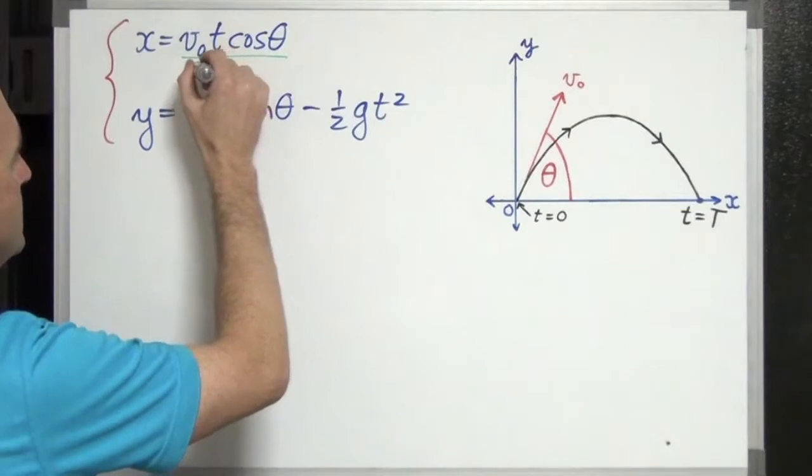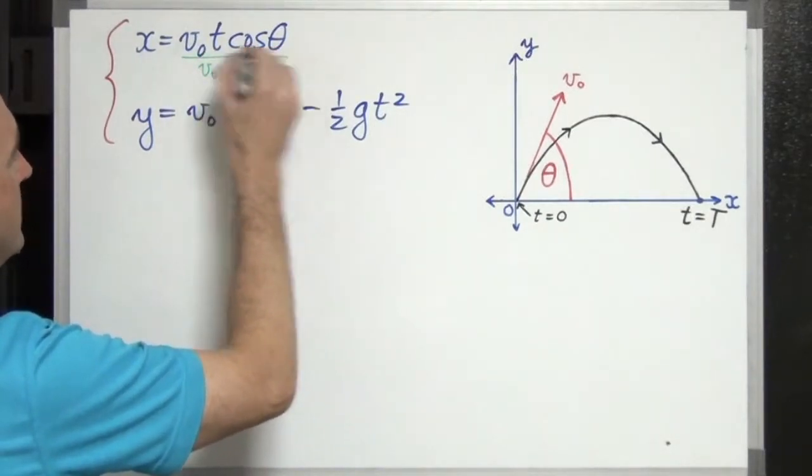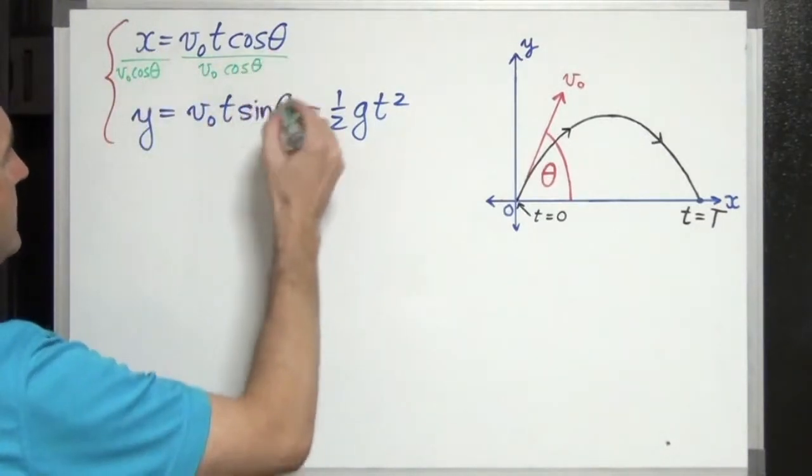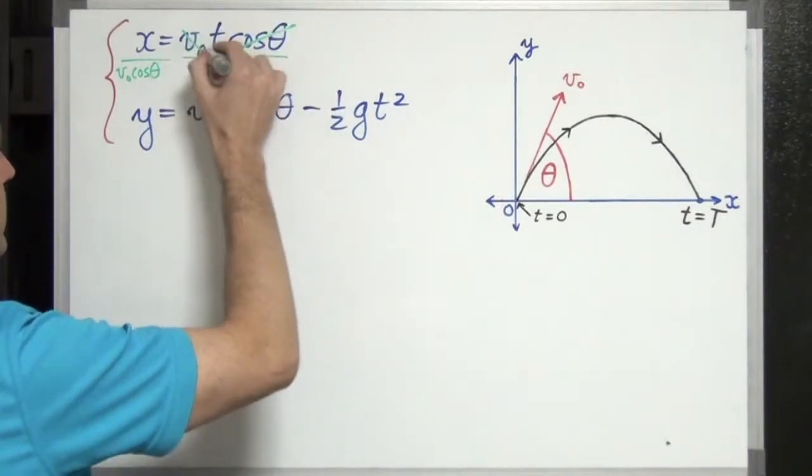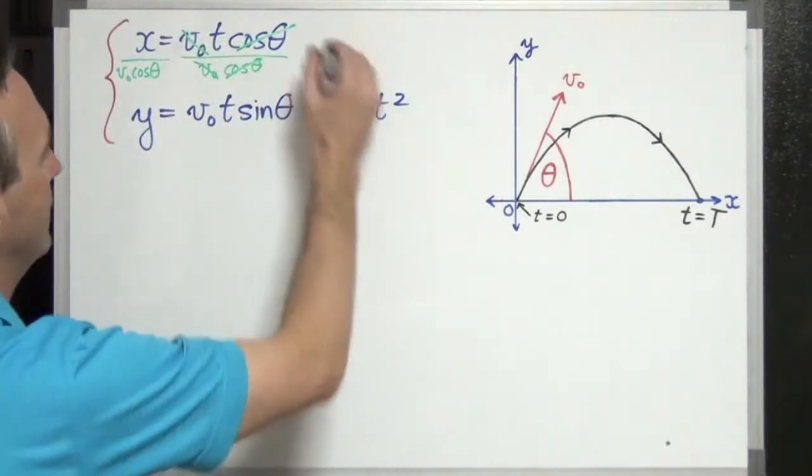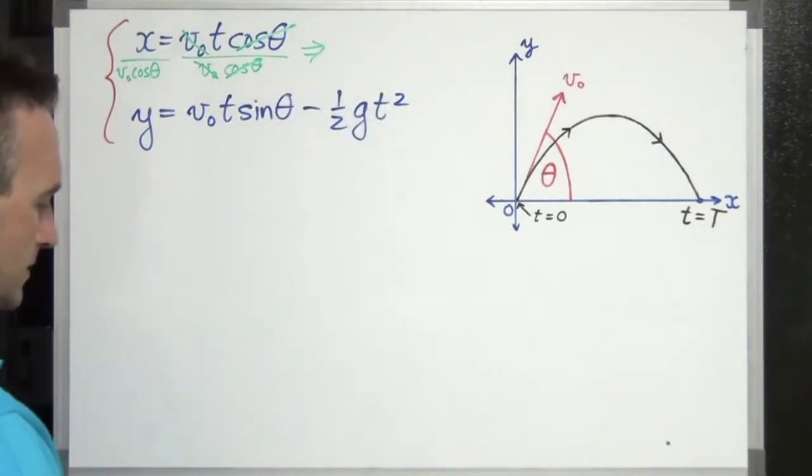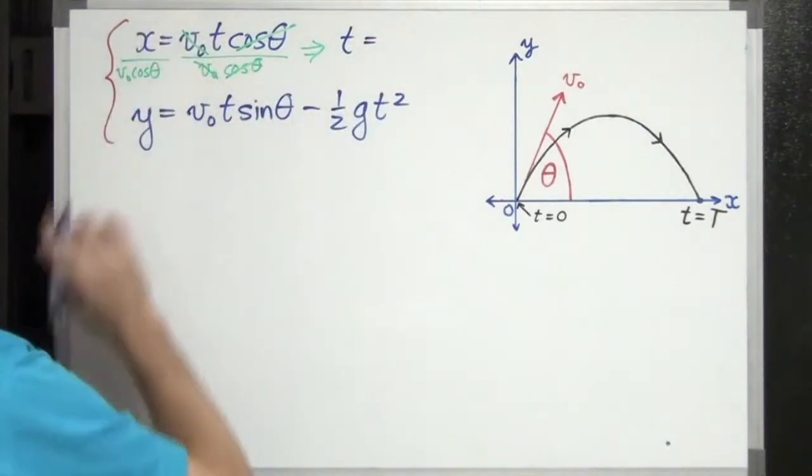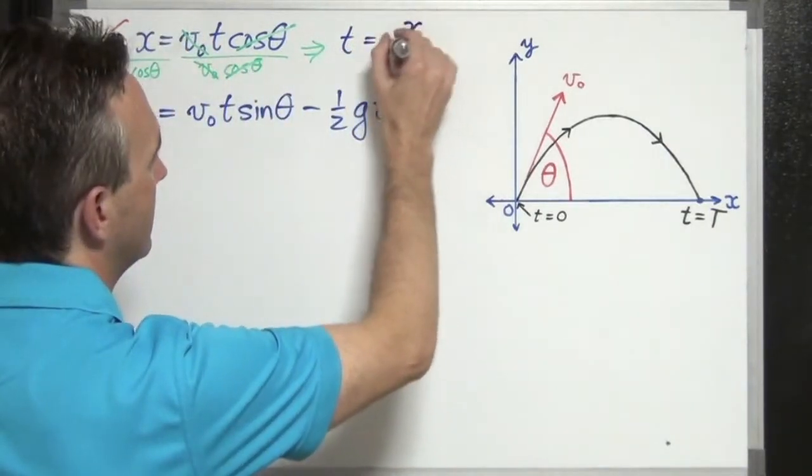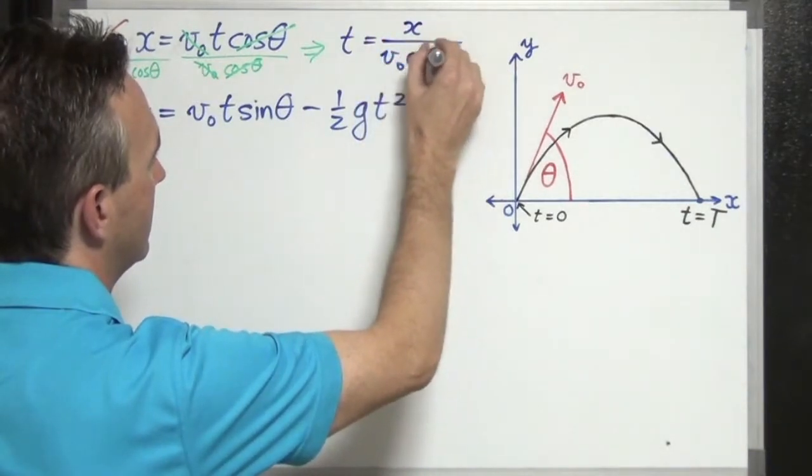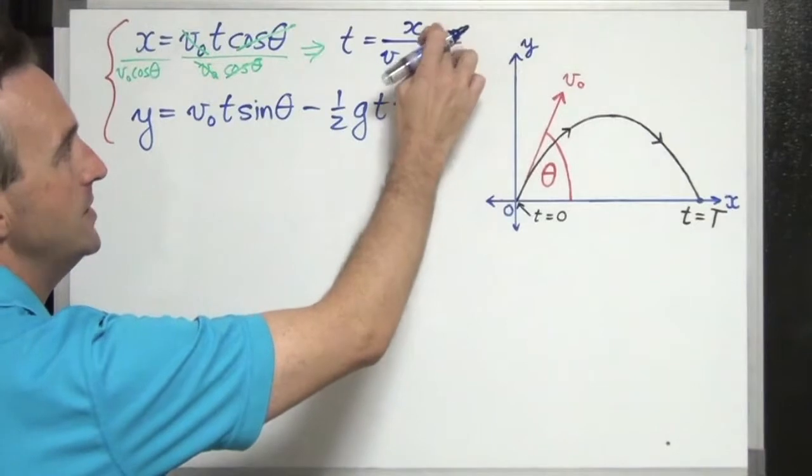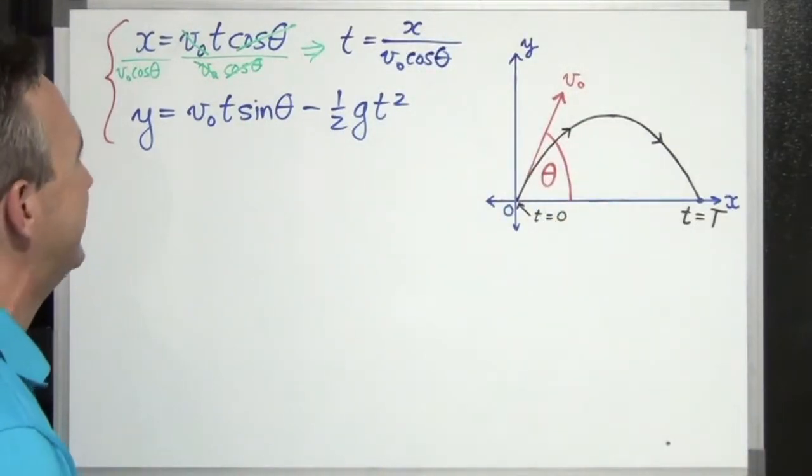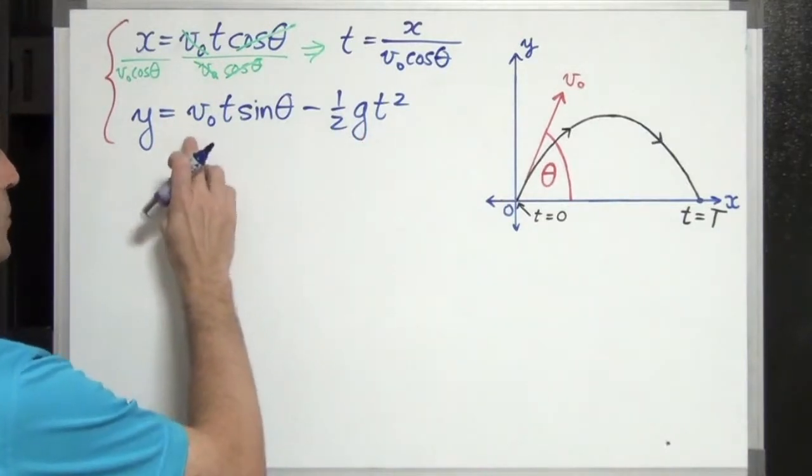So I'm going to divide both sides by v naught cos theta. Cos theta is going to cancel and the v naughts are going to cancel. And I might just move that over here to write the results. You can see that t is alone and it's going to be t equals x over v naught cos theta. Okay, so I'm going to substitute this equation into this one and the t will disappear leaving us with x and y and the constants g, v naught, and theta.